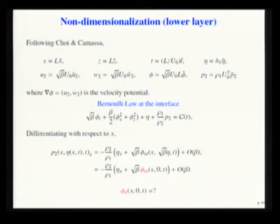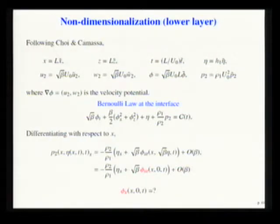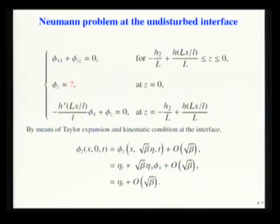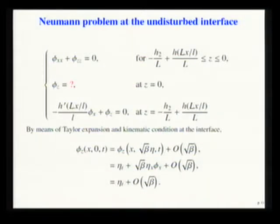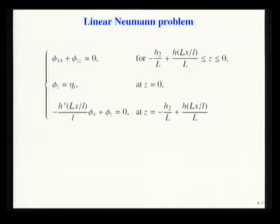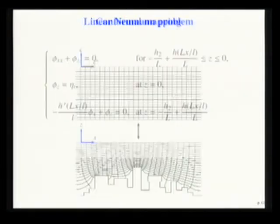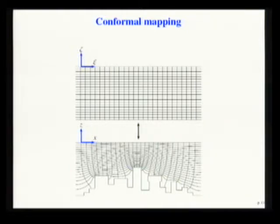Here we have the same scale for the space variables. Using Bernoulli's law at the interface, differentiating and using expansions, we recognize that it is only necessary to compute the vertical and horizontal velocity at the unperturbed interface. With this linearization, we have a normal problem at the interface that requires data obtained from expansion — a tailored expansion and kinematic condition at the interface. Up to this order, we have a linear Neumann problem with a complex condition at the bottom.